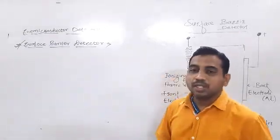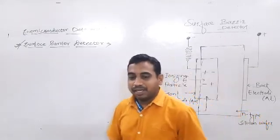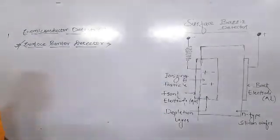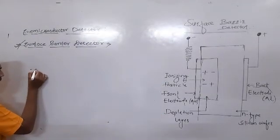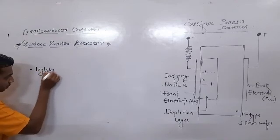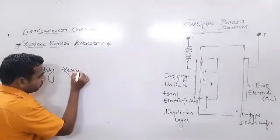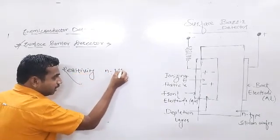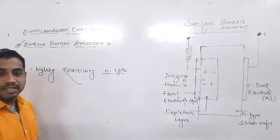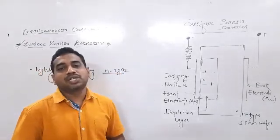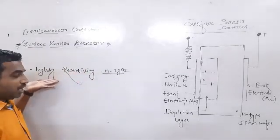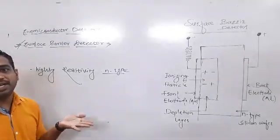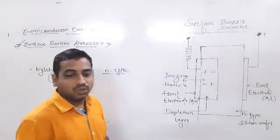Here, high-resistivity N-type silicon is used. The N-type silicon must be of high resistivity — that is an important requirement in the construction of these surface barrier detectors.